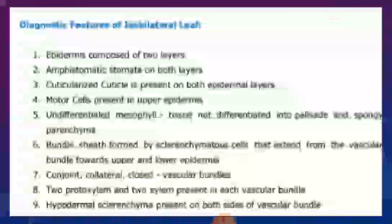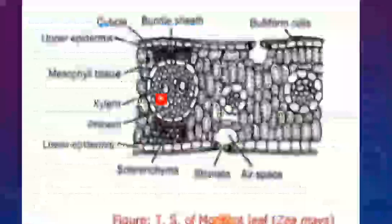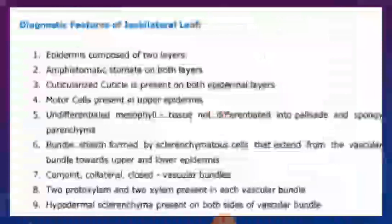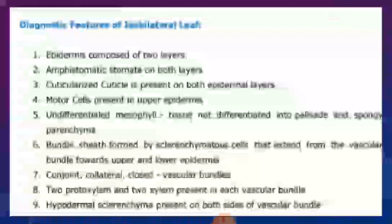The vascular bundles are conjoint, collateral, and closed. The xylem and phloem run side by side, and the cambium is absent, making it a closed type of vascular bundle. At least two proto-xylem and two meta-xylem elements are present in each vascular bundle.